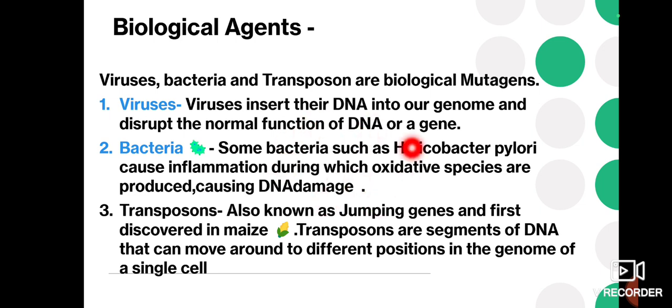Transposons are also known as jumping genes and were first discovered in maize, or corn. Transposons are segments of DNA that can move around to different positions in the genome of a single cell. By moving from one place to another within the nucleic acid, they also result in mutations. This concludes the topic of mutagens, which is an important topic from an examination point of view.